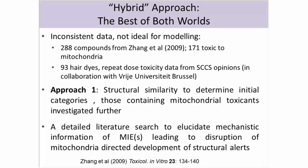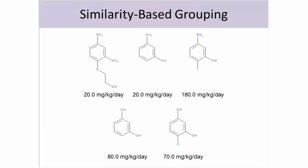He didn't stop there though. He looked at those groups and thought about potential molecular initiating events. Here is one of his similarity-based groupings, with NOEL values drawn from the SCCS opinions. Chemical similarity gets you to this group — that looks like a group of lambs. Look at the spread in the NOEL values: not great, but perhaps not too bad. Importantly, when you look at those data mechanistically, one data point sticks out.